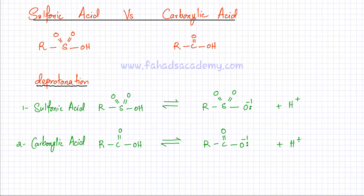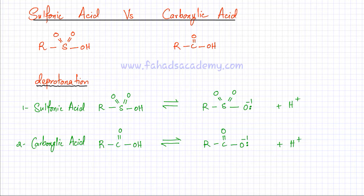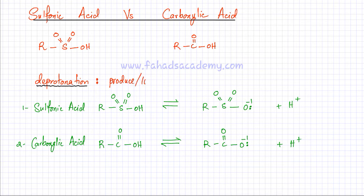Remember, the rest of the molecule is going to have an effect on the functional group in both cases. If this R is Cl or if this R is CH₃, then in both cases this would affect the sulfonic acid group. So I have these two acids and I'm going to compare their strength. Since acids produce H⁺ ions, deprotonation means that acids are going to lose H⁺ ions — these H⁺ ions are basically protons.